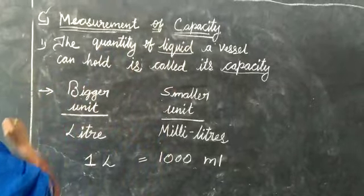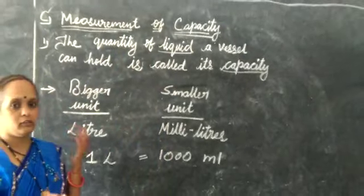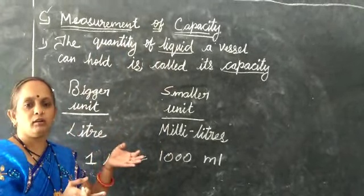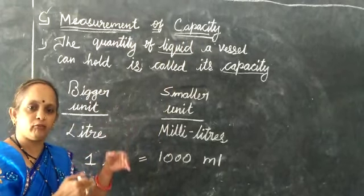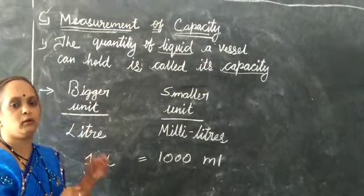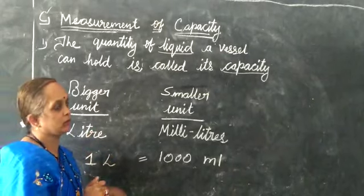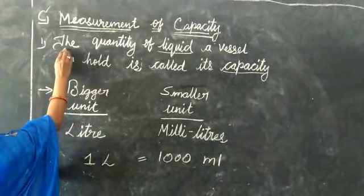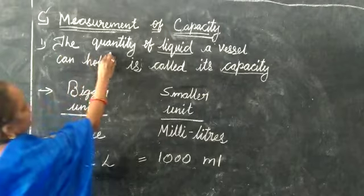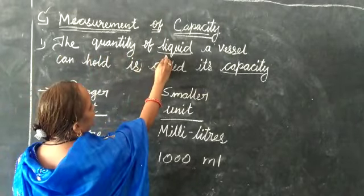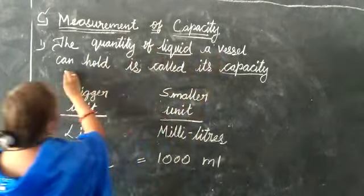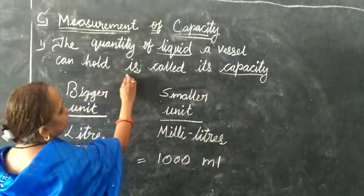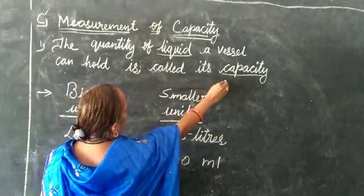Here capacity we are using for measurement for any liquid. Liquid is which can flow. The quantity of liquid a vessel can hold is called its capacity.